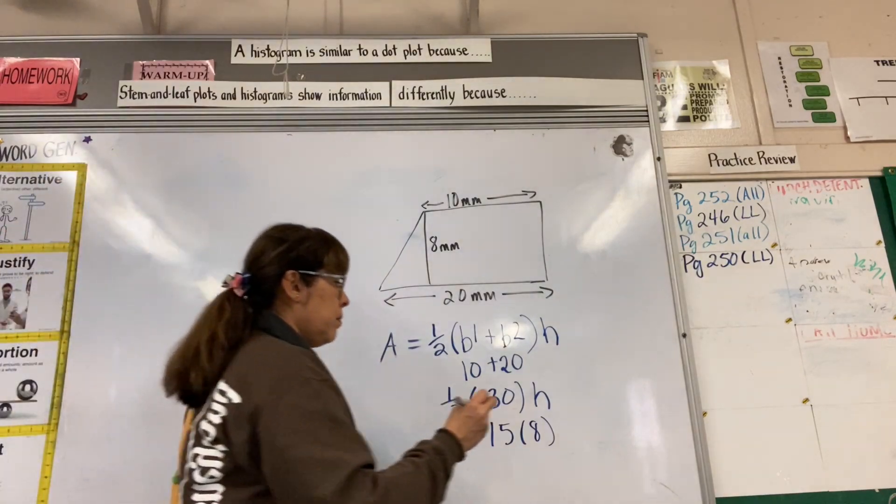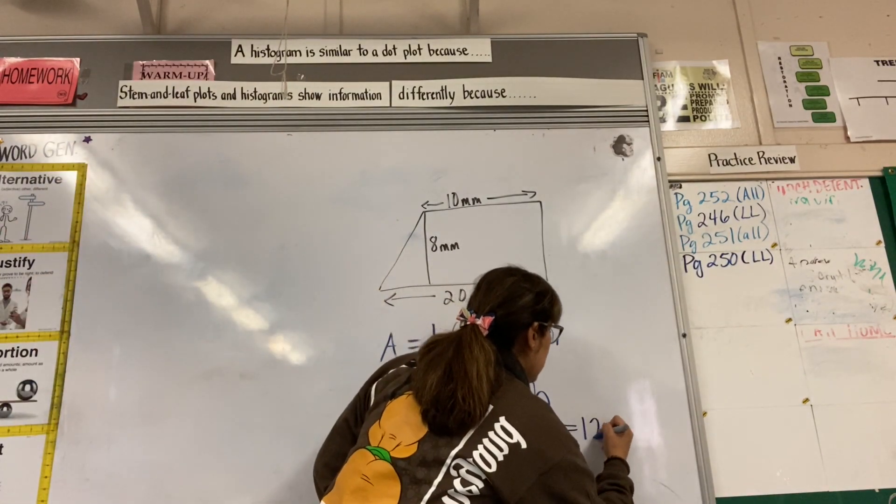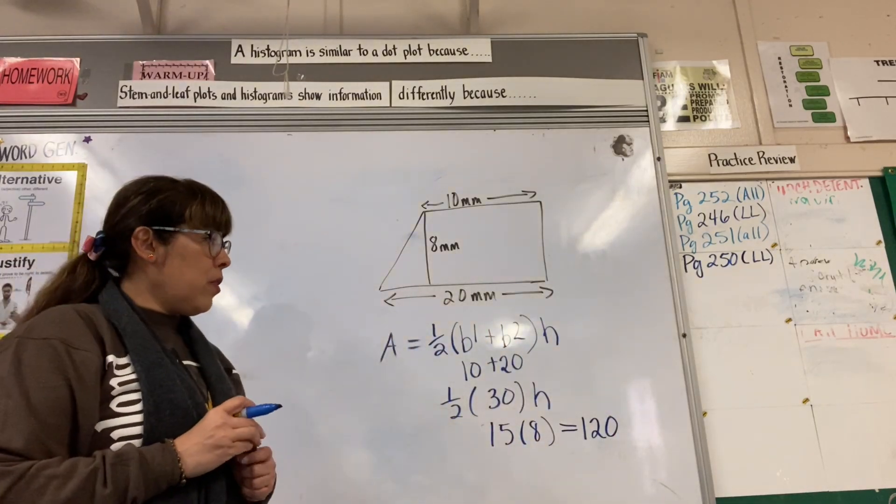We know 15 times 8 gives us 120, and that's our area for the trapezoid.